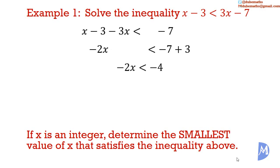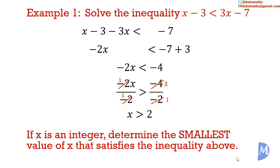We want x alone on the left-hand side, so we are going to divide by negative 2 on both sides. Negative 2 and negative 2 cancel. Negative 2 into negative 2 is 1; negative 2 into negative 4 is 2. So we remain with x is greater than 2. The second part of this question asks: if x is an integer, determine the smallest value of x that satisfies the inequality. The integers that satisfy the above inequality are 3, 4, 5, 6, and so on. So the smallest value of x is 3.